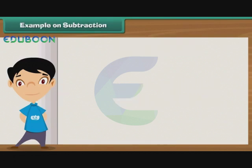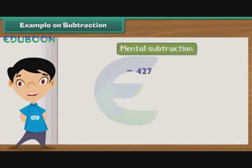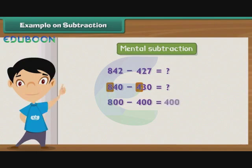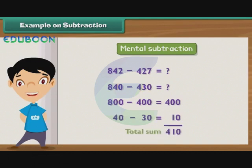Let us practice mental subtraction. Subtract 427 from 842. To simplify subtraction, let us convert 427 to 430 and 842 to 840. To subtract 430 from 840, first subtract 400 from 800 to get 400. Then subtract 30 from 40 to get 10. Therefore, the difference between 840 and 430 is 410.